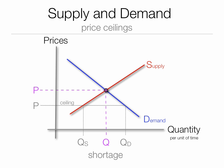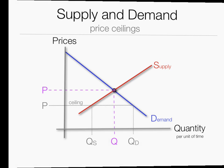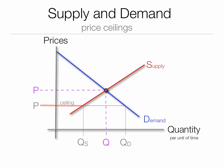Anytime quantity demanded is greater than quantity supplied, we have a shortage. The light red line shows how much will be supplied at that price, and the blue line shows how much will be demanded at that price. The green area represents the shortage.